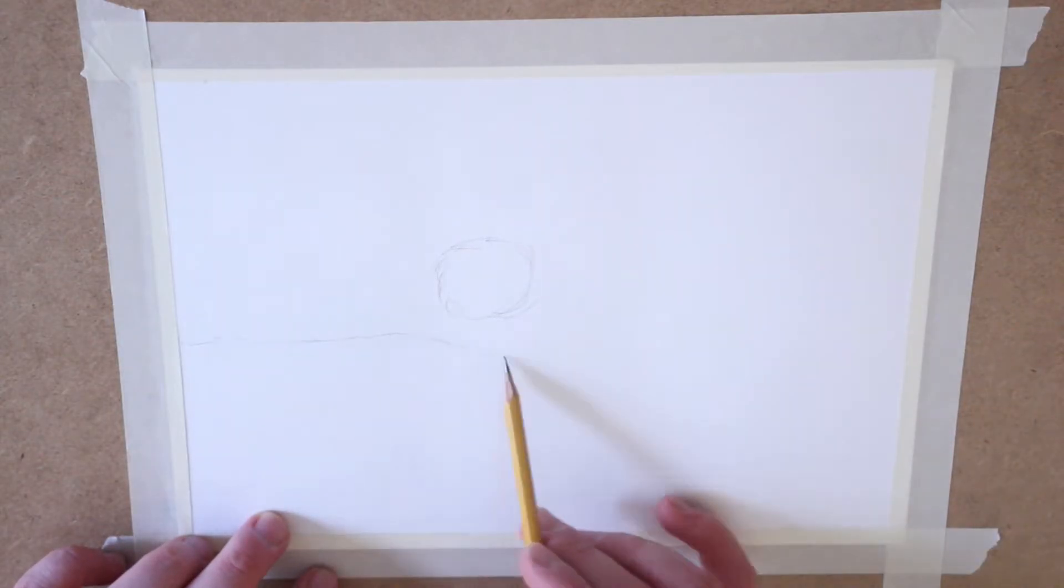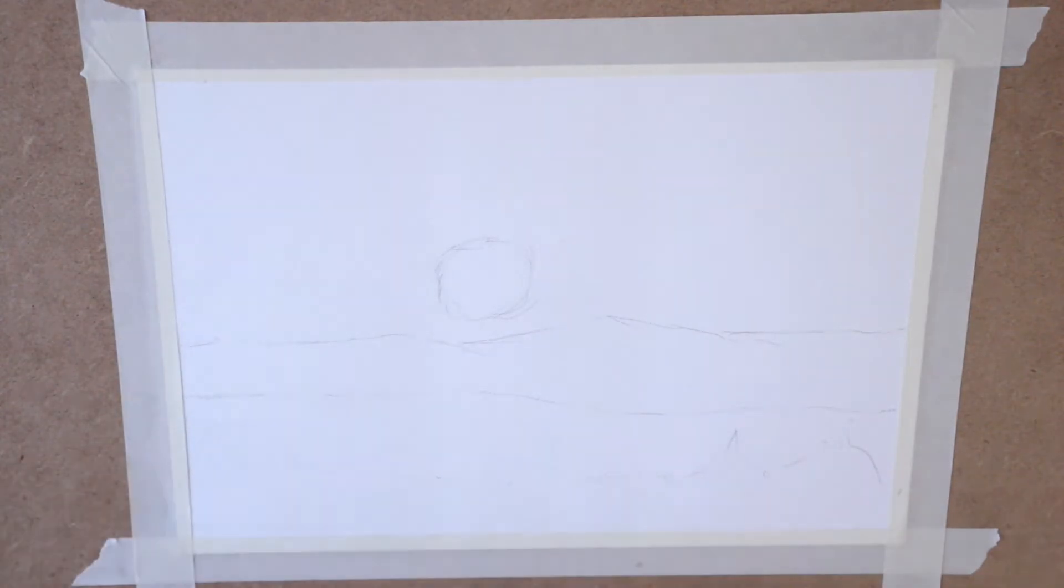To start, you are going to take a light pencil and you are going to block in where you want everything to go. Make sure you do it lightly because chances are you're going to have to erase some of the lines.